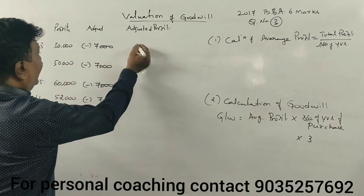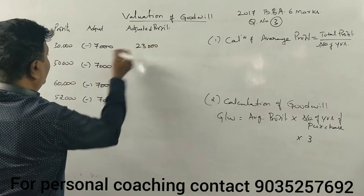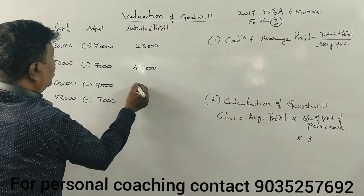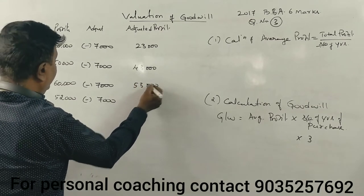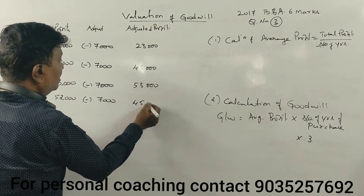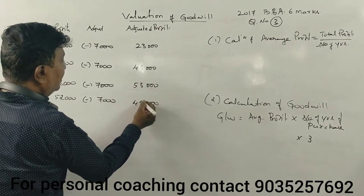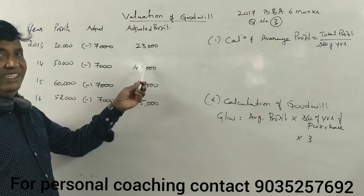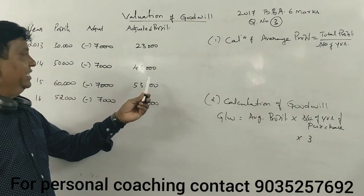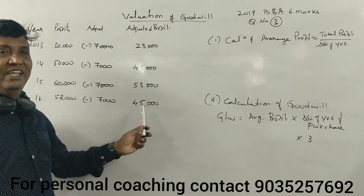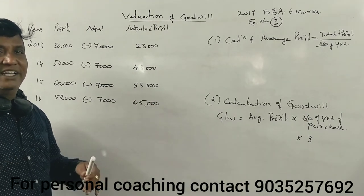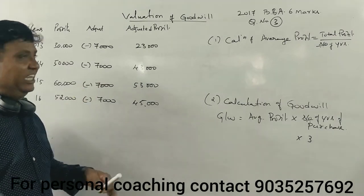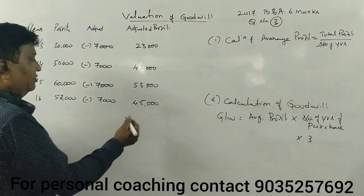The profit figures are: 23,000; 43,000; 53,000; 45,000. Profit is not the same — it will fluctuate. The profit varies.